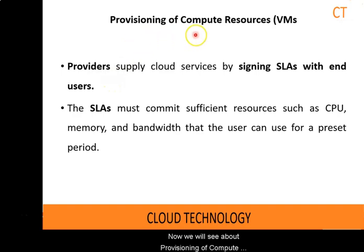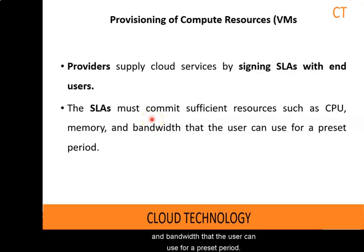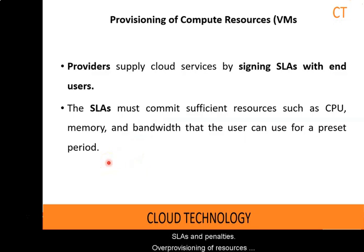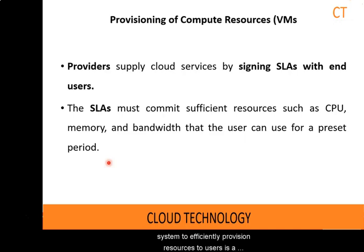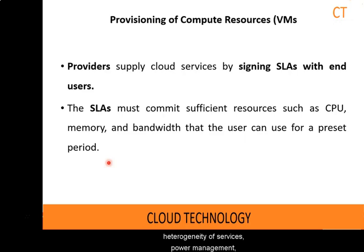Now we will see about provisioning of compute resources and VMs. Providers supply cloud services by signing SLAs with end users. The SLAs must commit sufficient resources such as CPU, memory and bandwidth that users can use for a preset period. Under-provisioning of resources will lead to broken SLAs and penalties. Over-provisioning of resources will lead to resource under-utilization and consequently a decrease in revenue for the provider. Deploying an autonomous system to efficiently provision resources is a challenging problem. The difficulty comes from the unpredictability of consumer demand, software and hardware failures, heterogeneity of services, power management, and conflicts in signed SLAs between consumers and service providers.